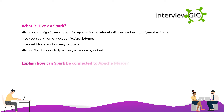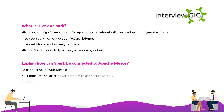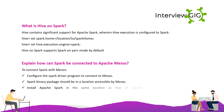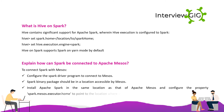Explain how Spark can be connected to Apache Mesos. To connect Spark with Mesos, configure the Spark driver program to connect to Mesos. The Spark binary package should be in a location accessible by Mesos. Install Apache Spark in the same location as Apache Mesos and configure the property spark.mesos.executor.home to point to the location where it is installed.